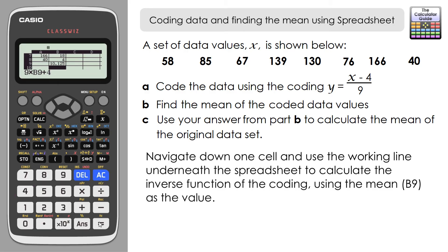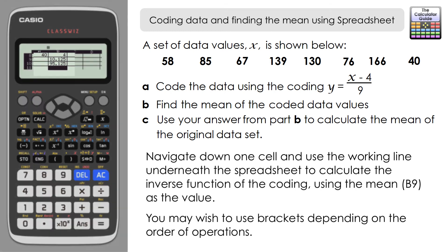Be careful here. You may wish to employ brackets depending on if you needed to add or subtract first, but we wanted to multiply first so that's fine. Order of operations should sort that out. Press equals and here we have the mean of the original data set: 95.125.